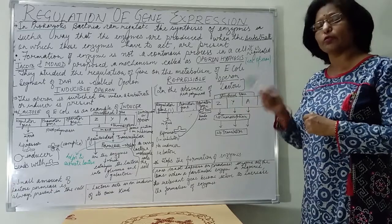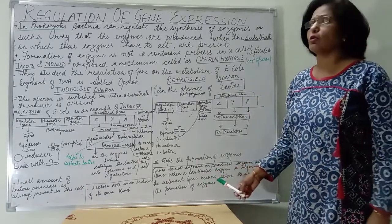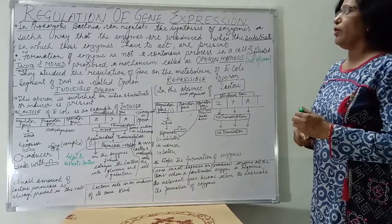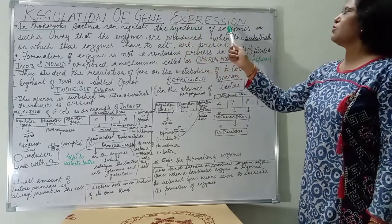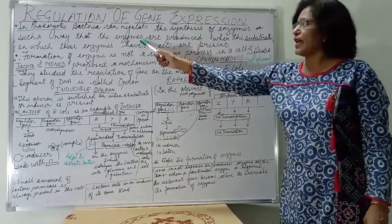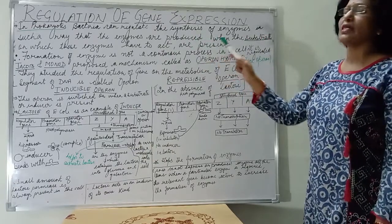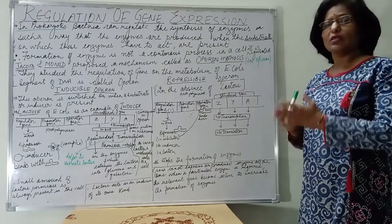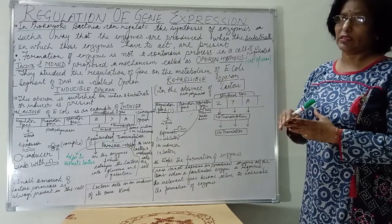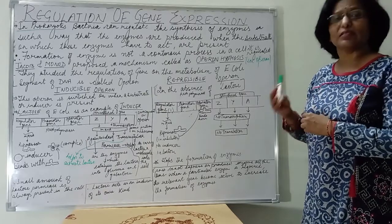The gene responsible to produce that particular enzyme becomes active and increases the formation of enzymes. We are taking the example of bacteria, which regulate the synthesis of enzymes such that enzymes are produced when the substrate on which these enzymes have to act is present. The enzymes become active when the substrate is present, and they convert it into the simplest form and release energy.